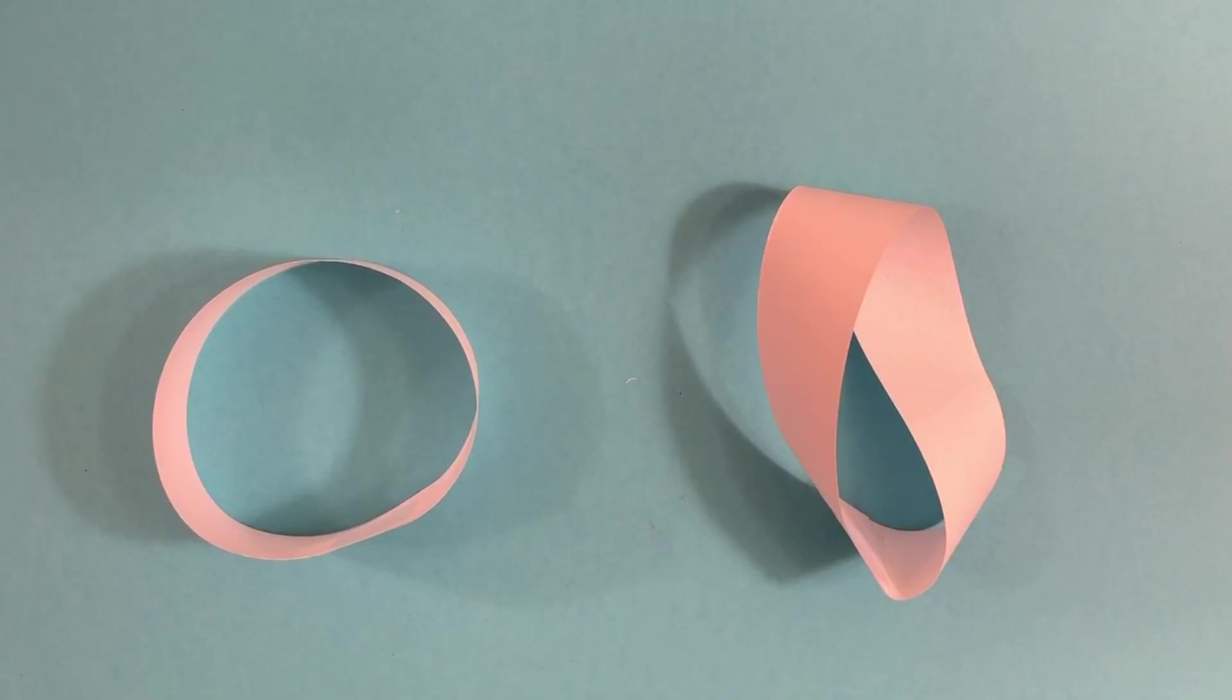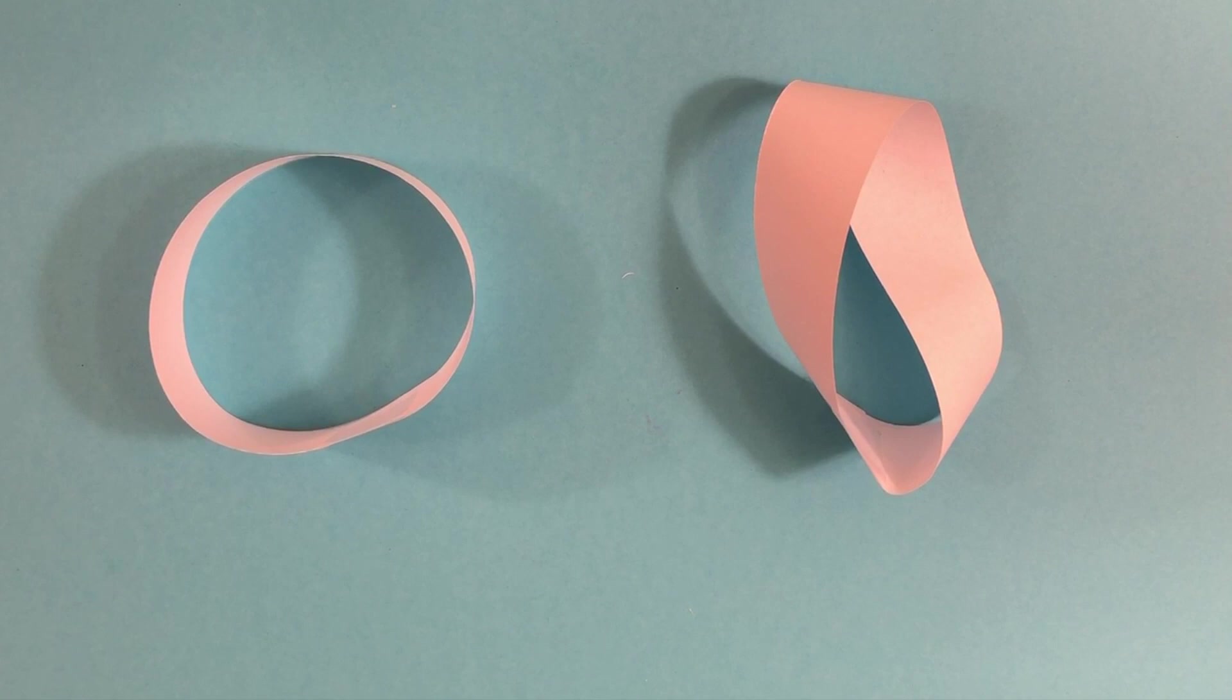For this next one, you will need to have a partner. Make both a ring and a Mobius strip. When you're done, you're going to tape them together like this.